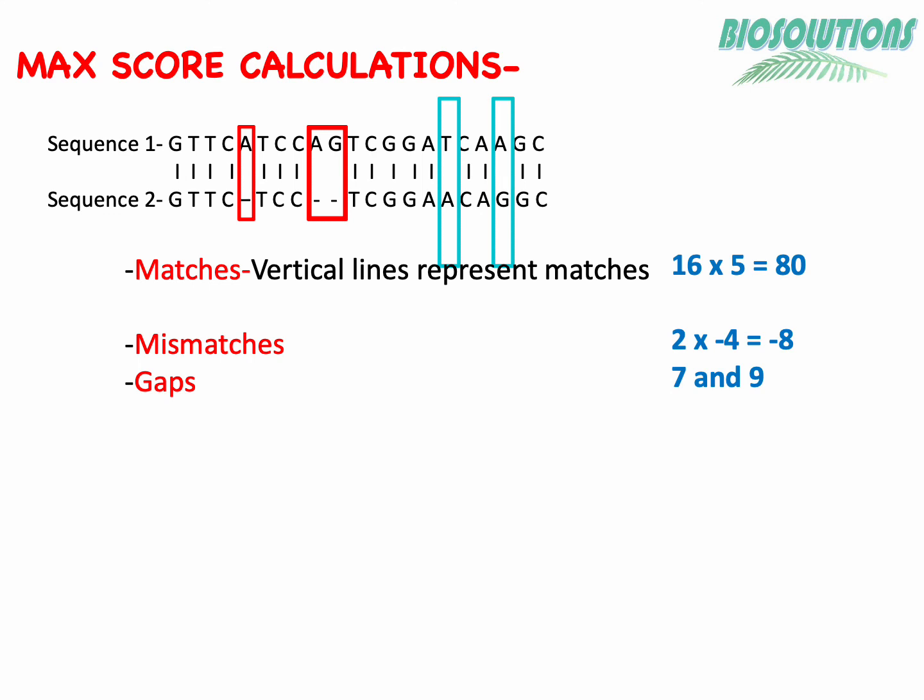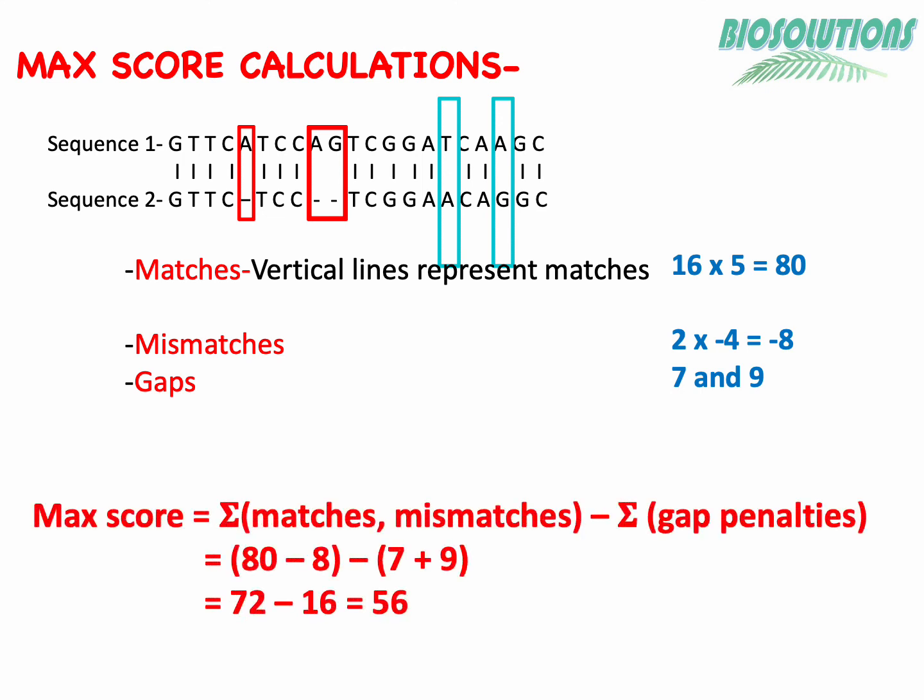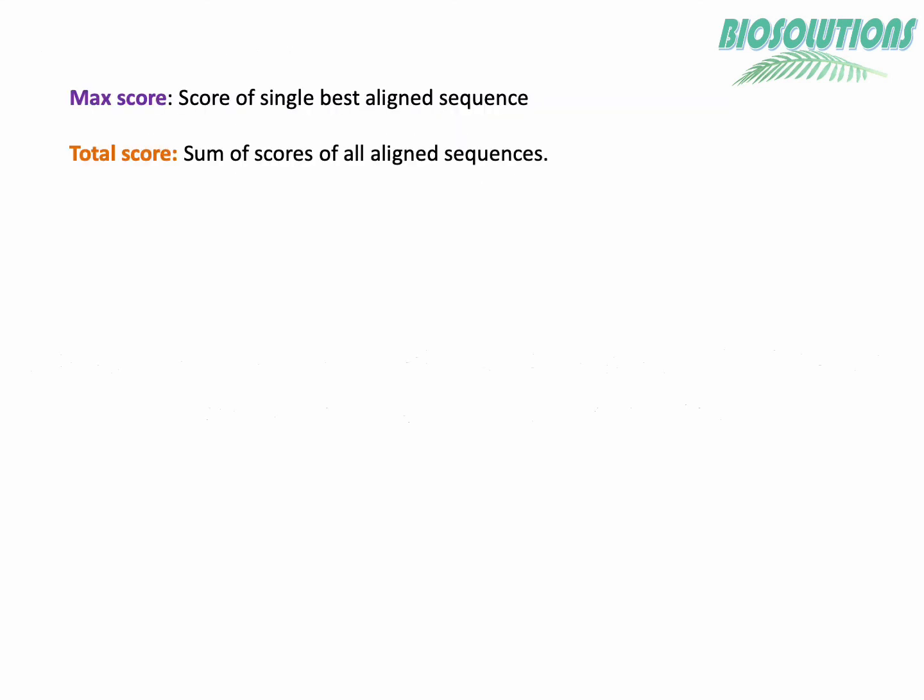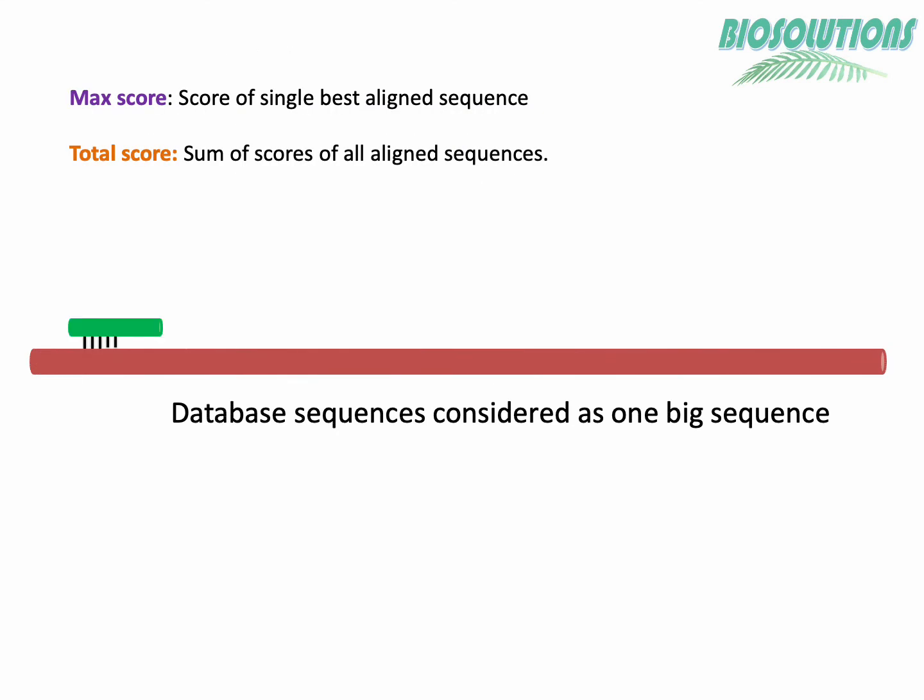Hence for 16 matches the score is 80. For two mismatches the score is minus 8. Now we will use this formula and place all values. Our max score is 56.